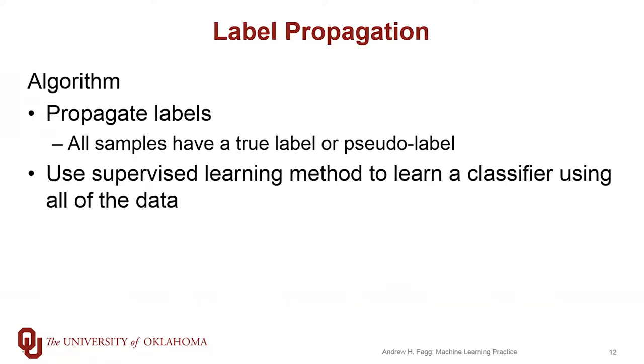The larger algorithm for building a classifier looks like this: we first take the step of propagating the labels, so that then means that every sample has either a true label or a pseudo label. And then we use our favorite supervised learning classifier method to actually build those classifiers.